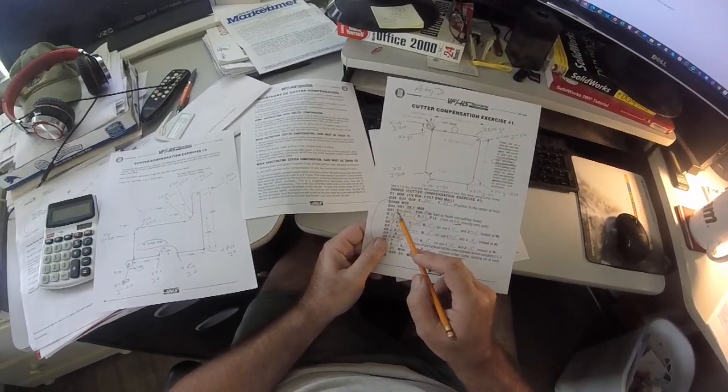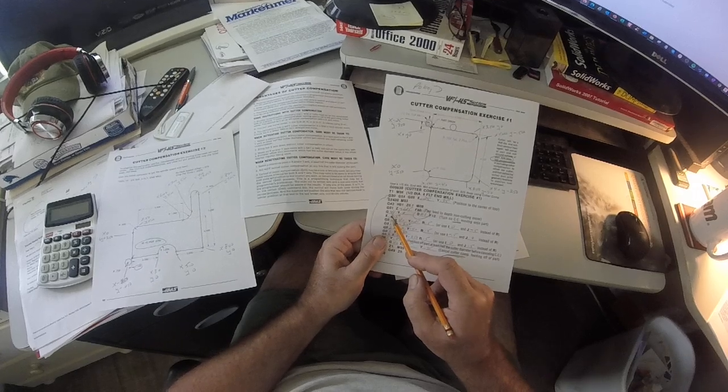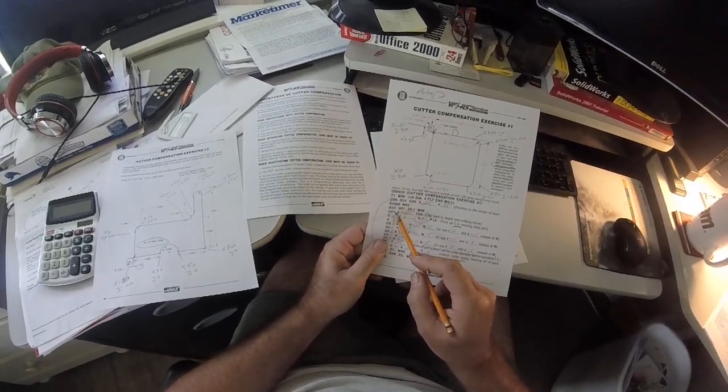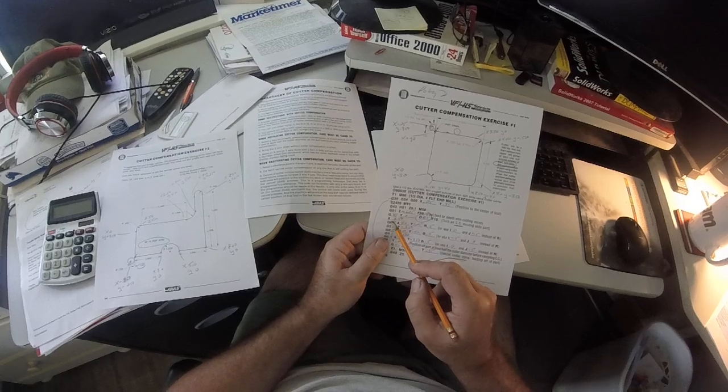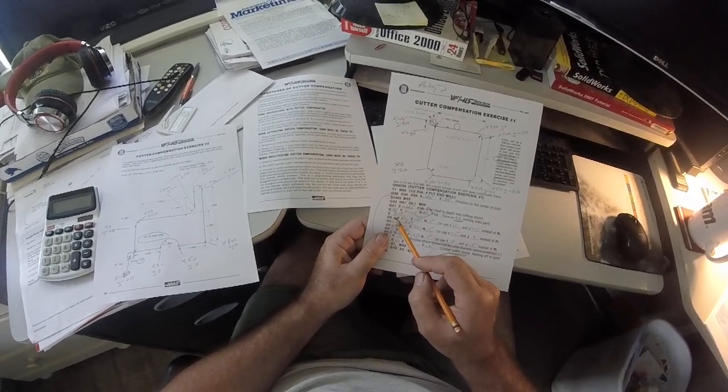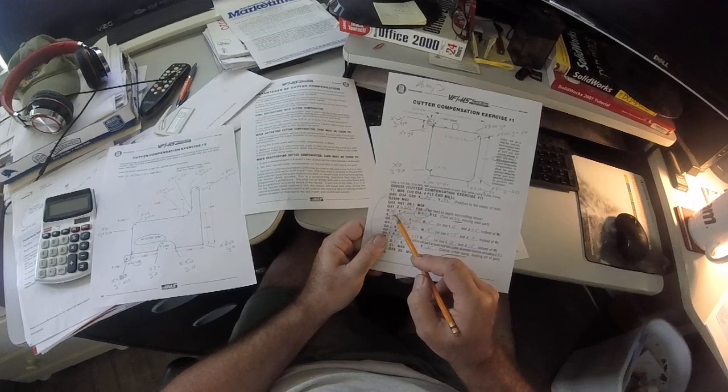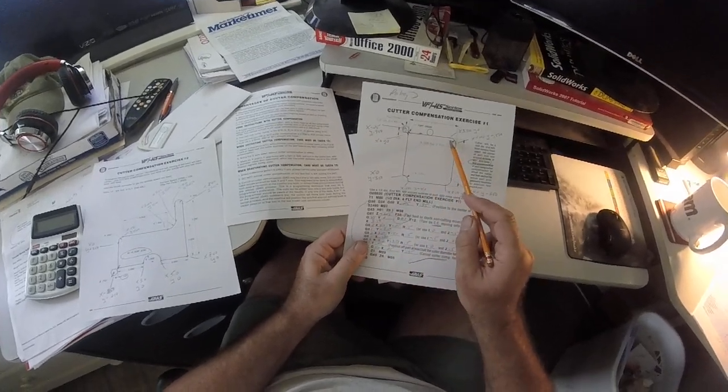Then we're going to go to each point. So we're still in G, this is G1, that's G1, that's G1. This is called modal. Once it's in that mode, it stays in that mode until you tell it something different. So this is G1 to Y0, and this is going to be G1 to 3.5.